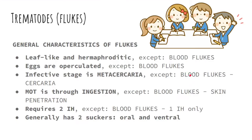Let's discuss the brief introduction regarding our Trematodes, also known as Flukes. Here are the general characteristics of our Trematodes or Flukes. First, they are leaf-like and hermaphroditic, meaning they do not have separate sexes — just like your cestodes. In comparison, nematodes or roundworms are non-hermaphroditic, meaning they have separate male and female.